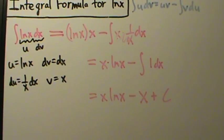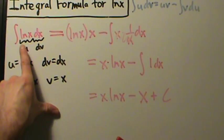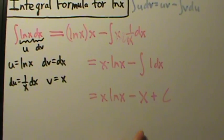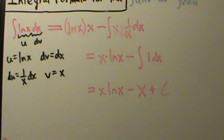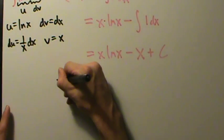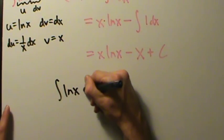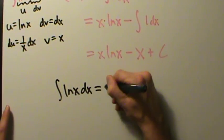But anyway, here's our answer, okay? So the integral of natural log of x dx equals x lnx minus x plus c. So it's a pretty direct and simple application of integration by parts. It's one of the simplest examples you can have, really, with integration by parts.